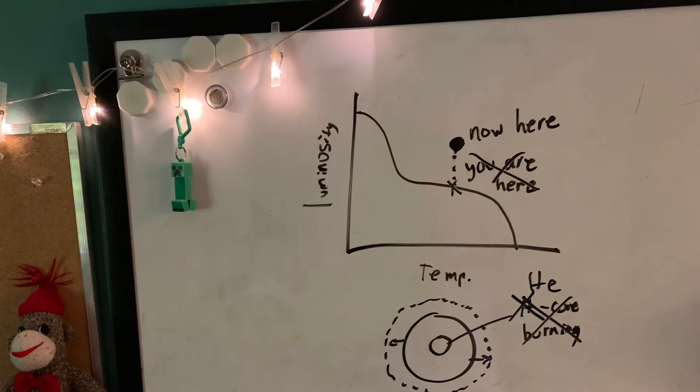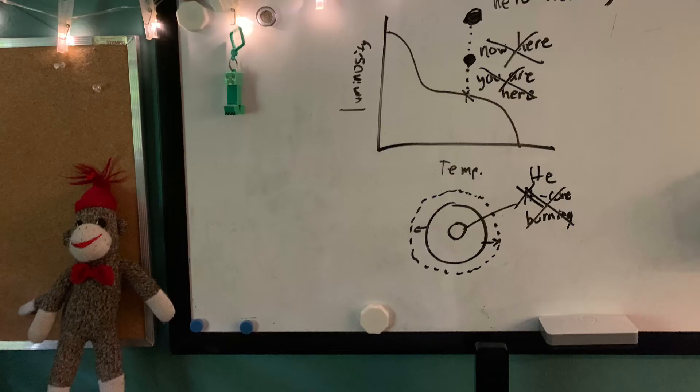After the core continues to turn hydrogen into helium, its radius gets larger, which increases luminosity. Therefore, it moves up in the HR diagram. And this is the red giant branch, which is stage 9.